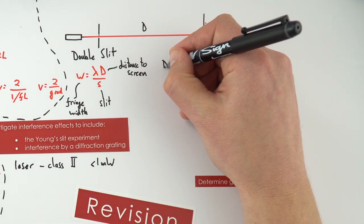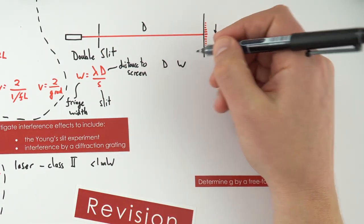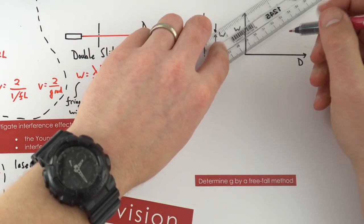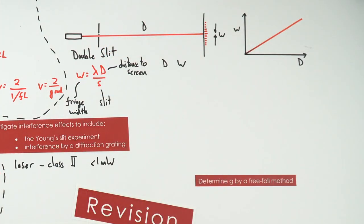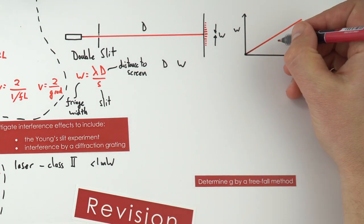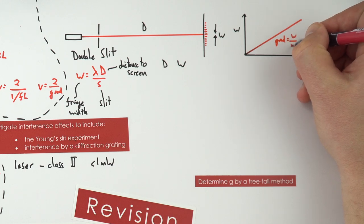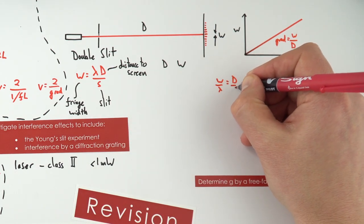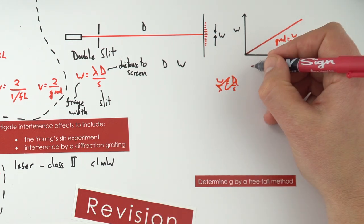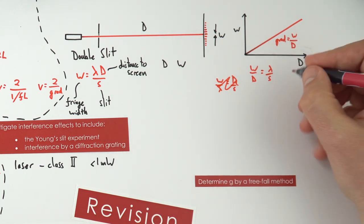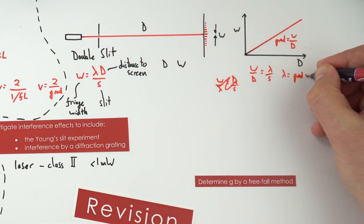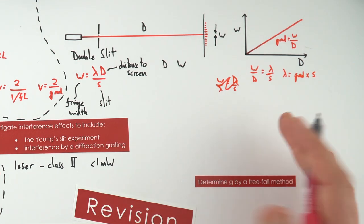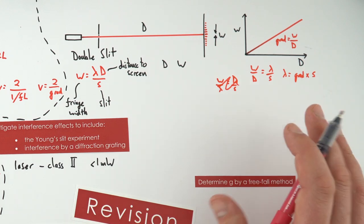With your values of D and corresponding W, you plot the data. As the screen moves further from the slit, the fringe spacing increases, giving a straight line through the origin. The gradient equals W/D. From W = λD/S, we get W/D = λ/S, so the wavelength equals the gradient multiplied by the slit separation S. For red light, you should expect a wavelength in the range of 600 to 700 nanometres.